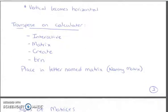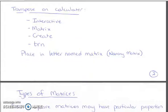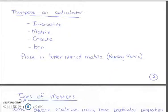Vertical becomes horizontal if you want to remember it that way. How to transpose on your calculator: there's a way here, but it's quicker if you can just do it by hand.